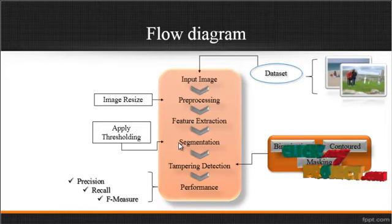In the merged regions, the segmentation result is shown. In the segmentation, the template region is indicated. After the segmentation, template detection is done using three steps: first is binarization, then contour detection, and then masking.